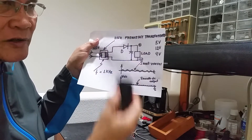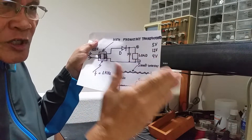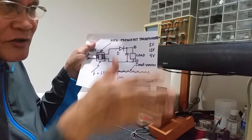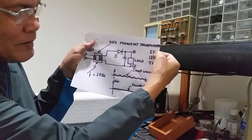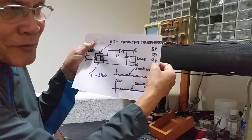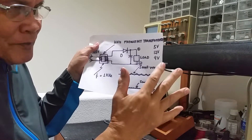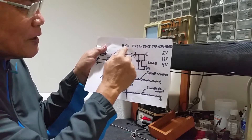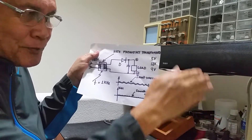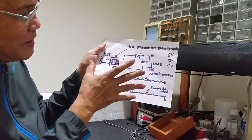Even for big-screen TVs, the switch-mode power supply uses high-frequency transformers, because there are so many voltages needed. Maybe you need 5 volts to power up the microprocessor, 12 volts to power the audio circuit, or 9 volts to power other modules. So for big-screen TVs there are multiple high-frequency transformers with different outputs to satisfy the voltage input for every internal module.